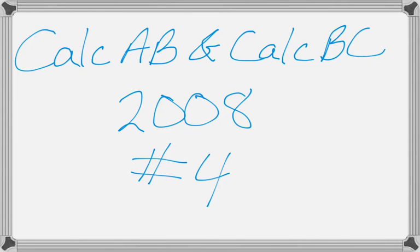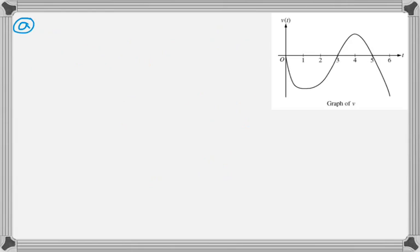This is number 4 from the 2008 Calc AB and BC exams, a graph velocity type problem. We're given a graph of velocity, and the first thing we're asked is the time and position of the particle when the particle is farthest to the left.